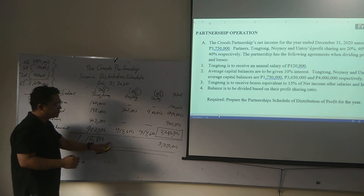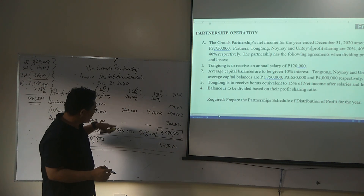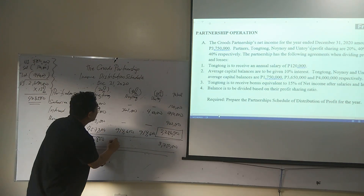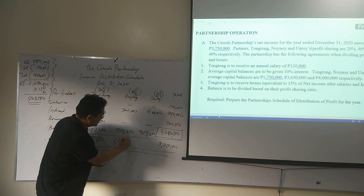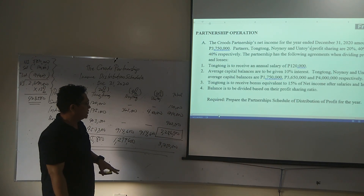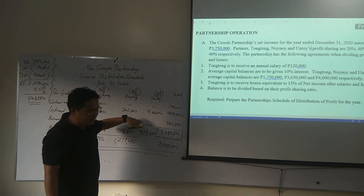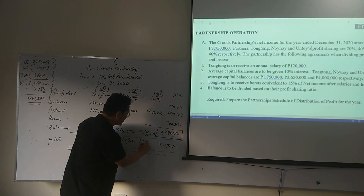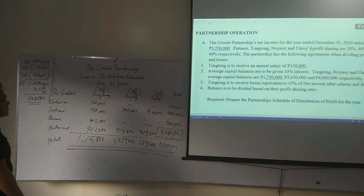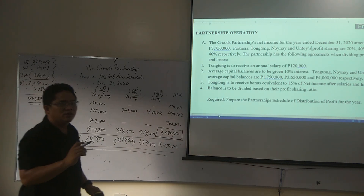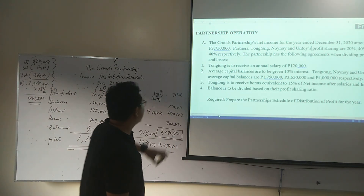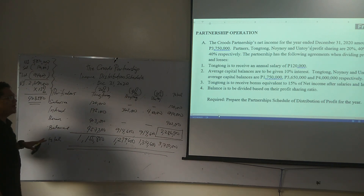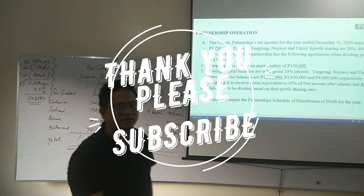So for the year 2020: Tongtong will get 120,000 plus 175,000 plus 403,500 plus 457,300, totaling 1,155,800. Winoy gets 165,000 plus interest plus ratio share, totaling 1,279,600. Ontoy will get 1,340,600. That's how we divide income to partners, and that is how we prepare an income distribution schedule.